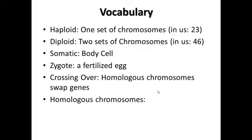Somatic cells are cells in your body — basically not sex cells, not gametes. Gametes are eggs and sperm. Another new word is zygote, which is essentially what happens when an egg and a sperm fuse and come together. It's a fertilized egg, and the cells begin to rapidly divide and become a new individual. Crossing over is something we're going to touch on, where you have homologous chromosomes. You've seen the X's — in a diploid organism they are in pairs.